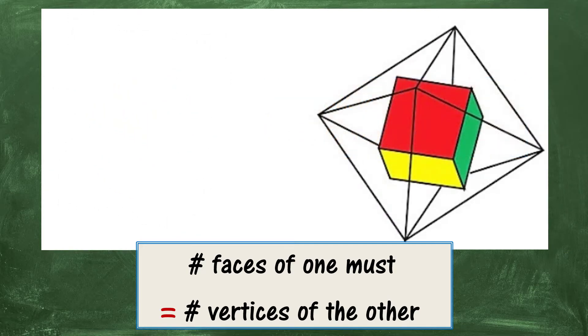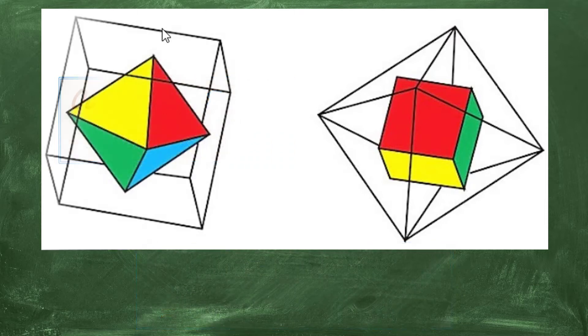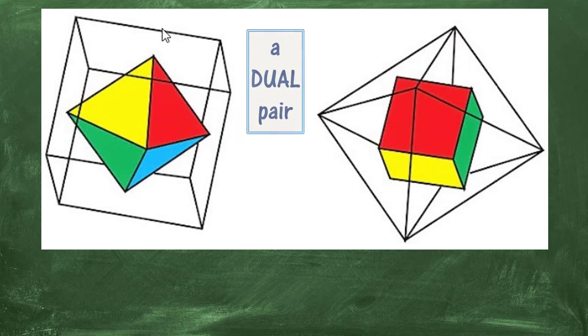And this is where the magic happens. Here we start with an octahedron. It has eight faces and the cube has eight vertices. So it works the other way as well. And this is called a dual pair.